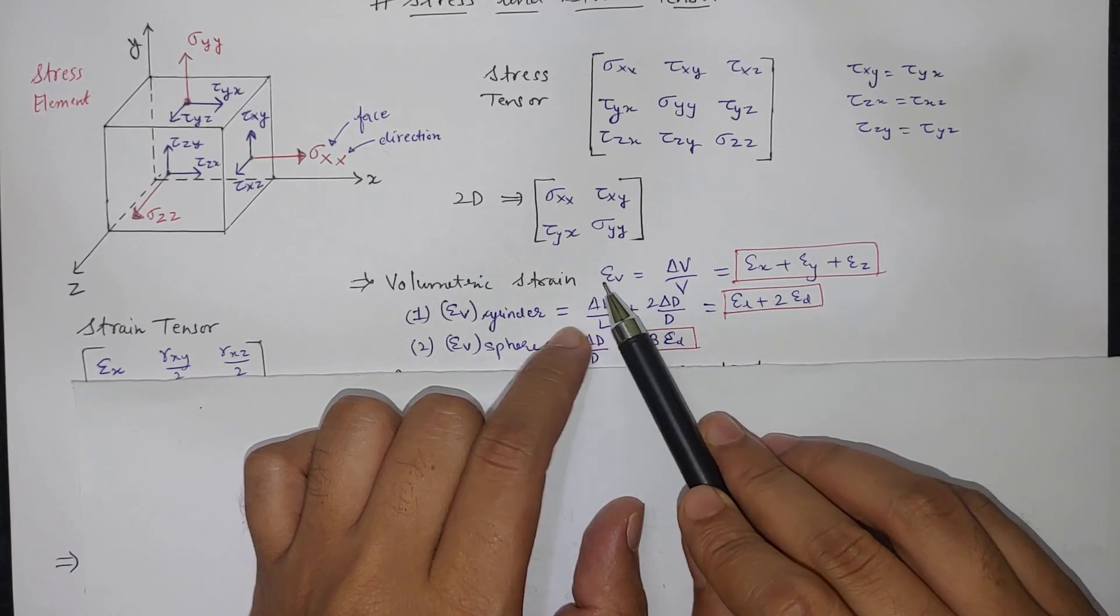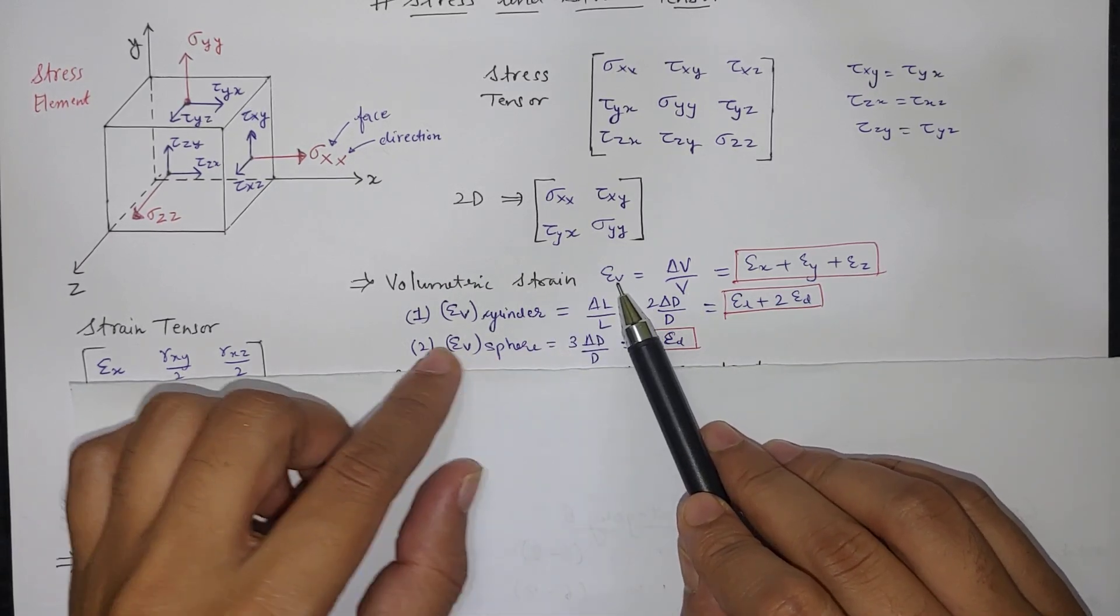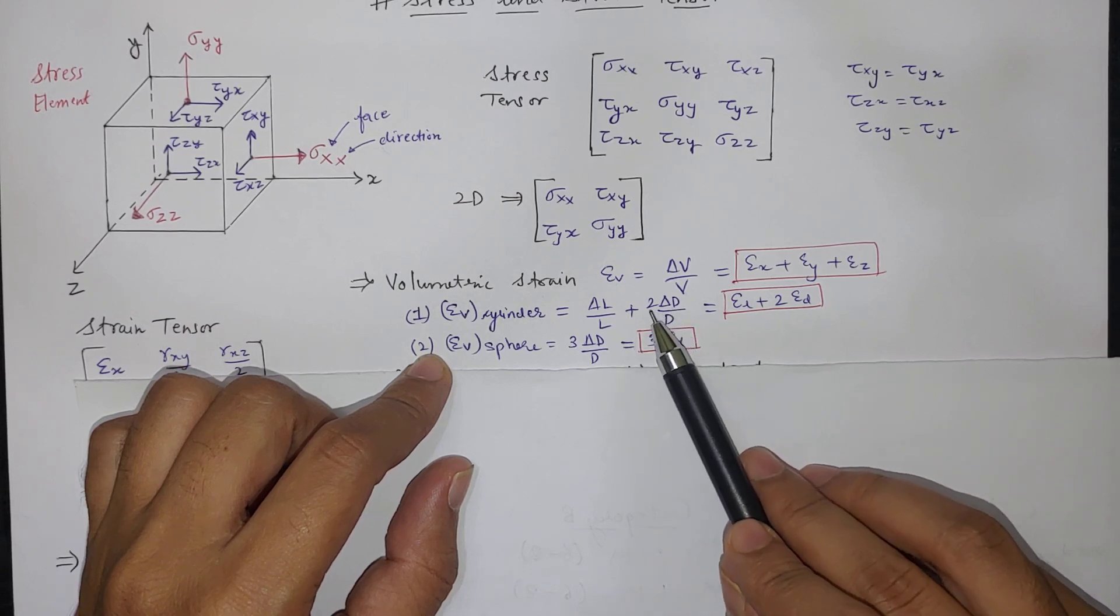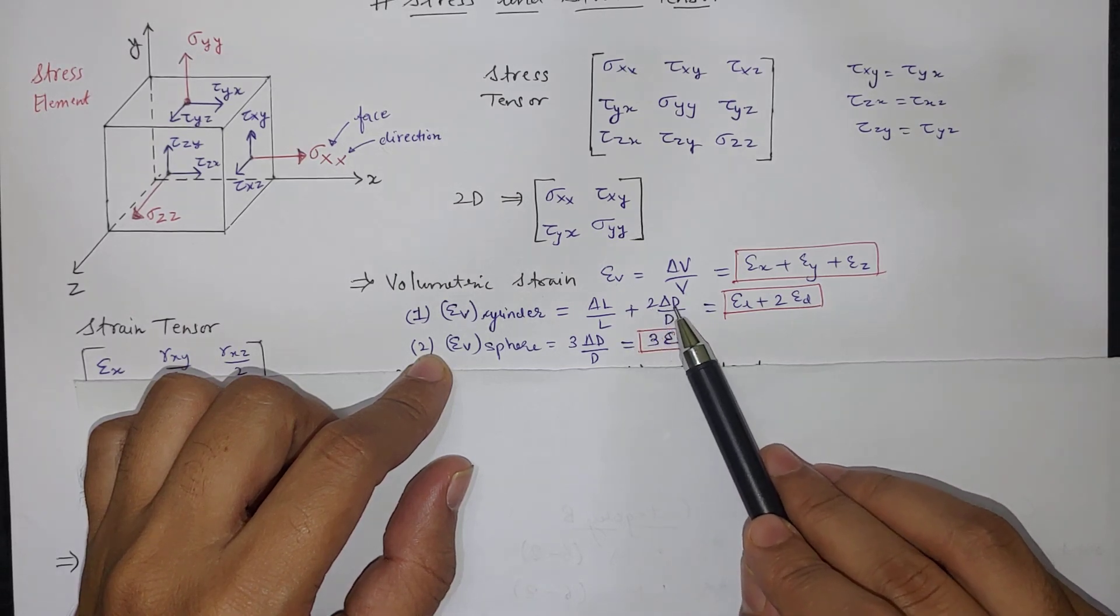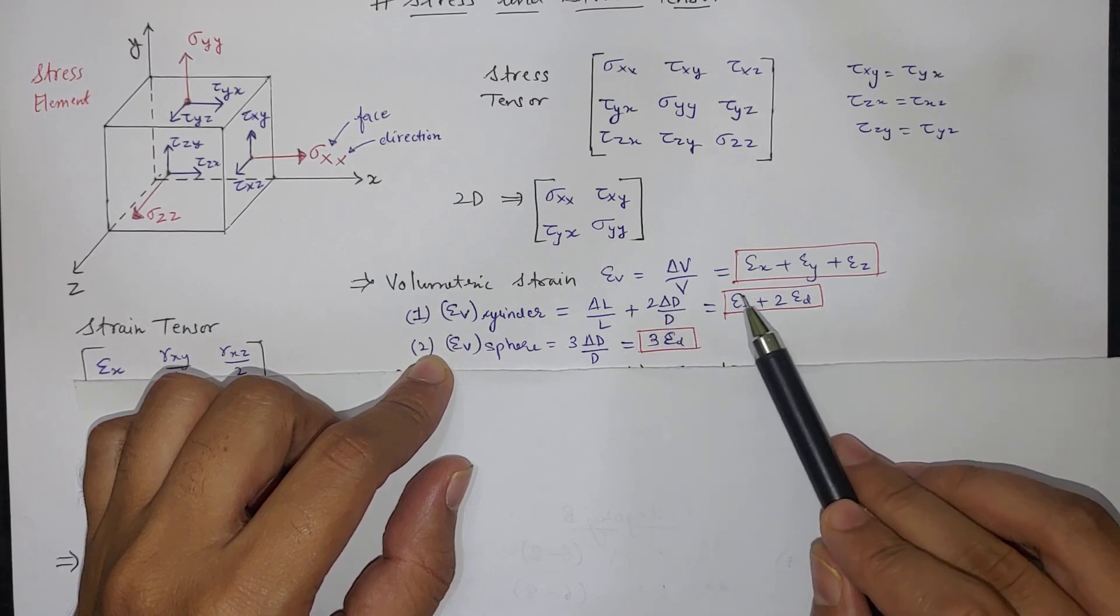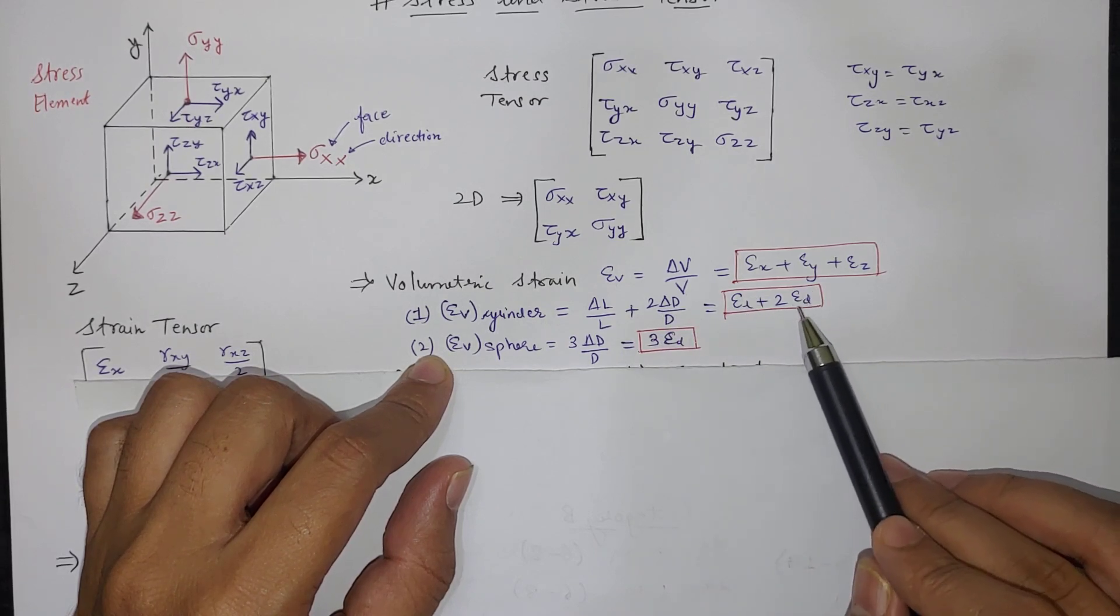So change in length divided by length, change in breadth divided by breadth, plus change in height divided by height. So that is how we can calculate volumetric strain. For cylinder if you see change in length upon length plus diameter is in both directions so 2 times delta D by D. So we can write strain in length plus strain in diameter into 2.